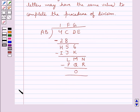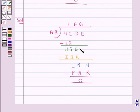Now let's move on to the solution. This is the procedure of division given to us. We need to replace all these English alphabet letters by some digits and two or more letters may have the same value.